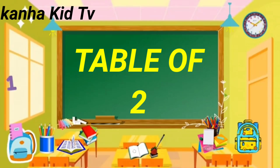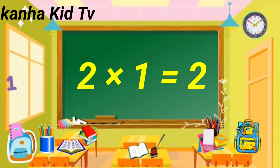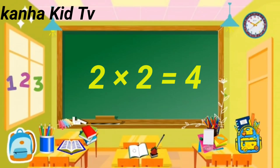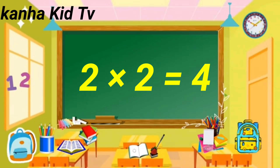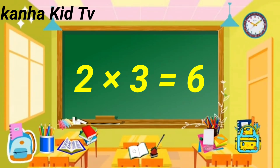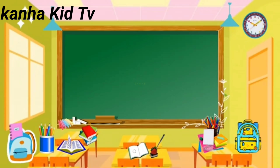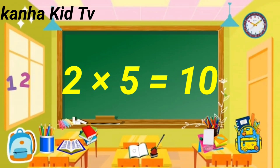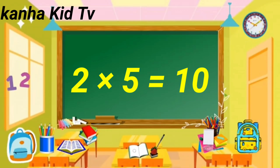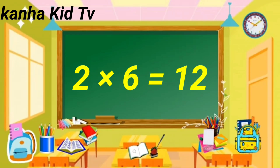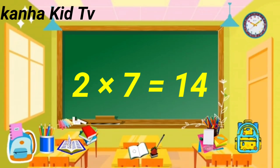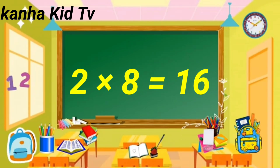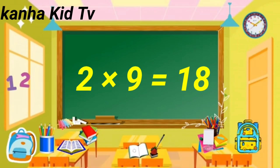Table of Two. Two sevens are fourteen. Two eights are sixteen. Two nines are eighteen. Two tens are twenty.